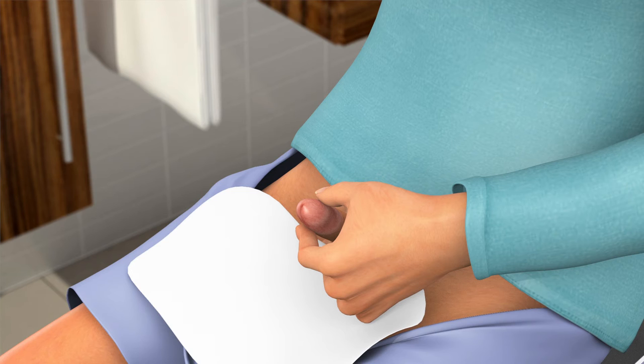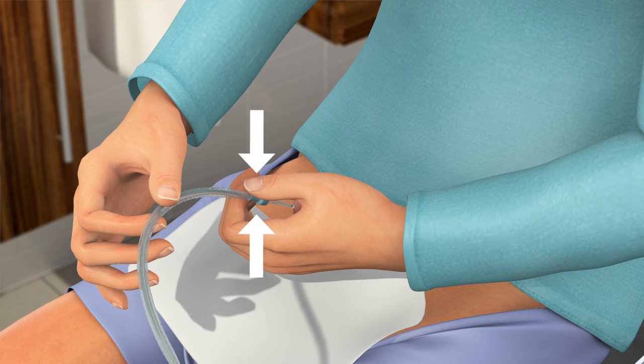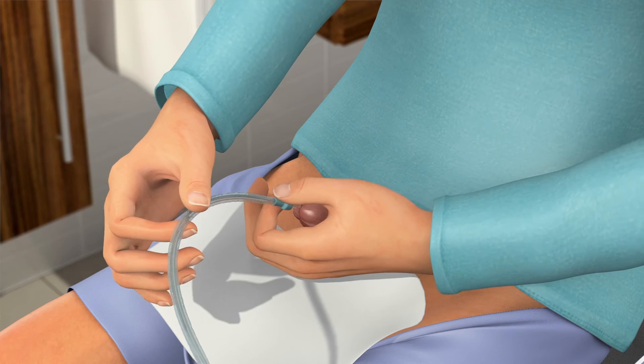To control insertion, softly squeeze the gripper indicated by the arrows. While supporting your penis, guide the tip of the catheter into the opening of the urethra.